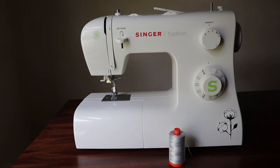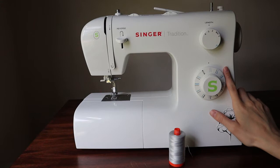There are two things we're going to need before we get started. The first is our Singer Tradition sewing machine. Before you start threading your machine, make sure it is in the off position and you can even do this while the machine is unplugged for extra safety.